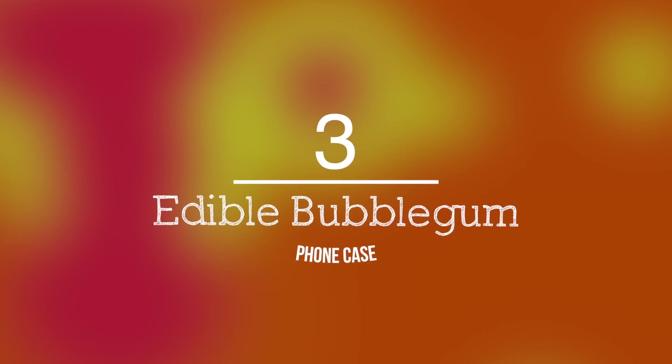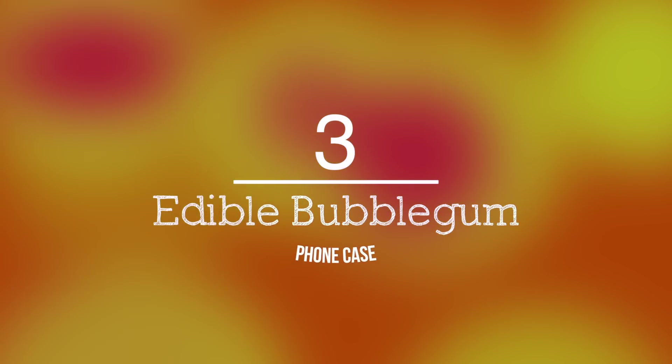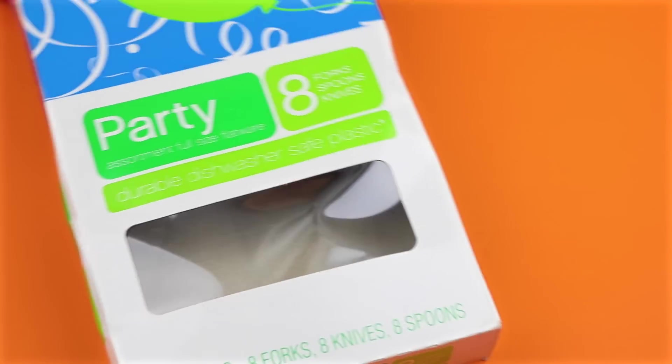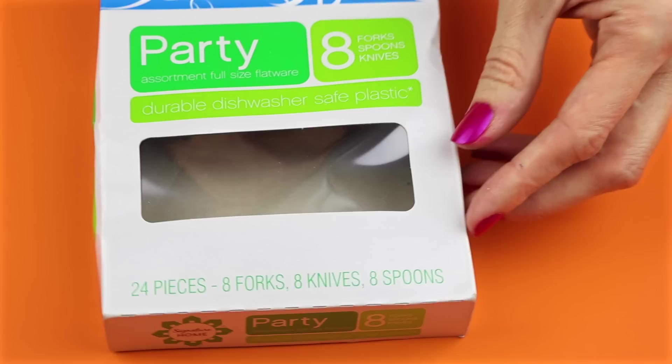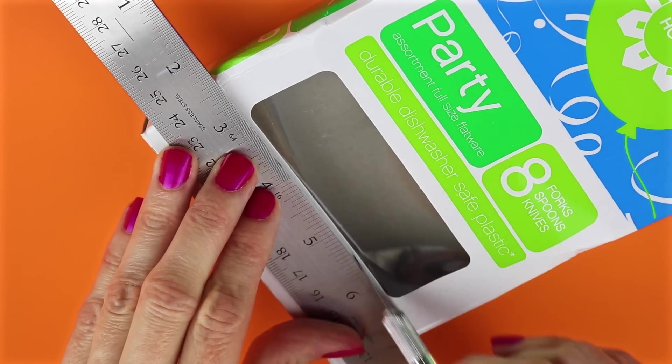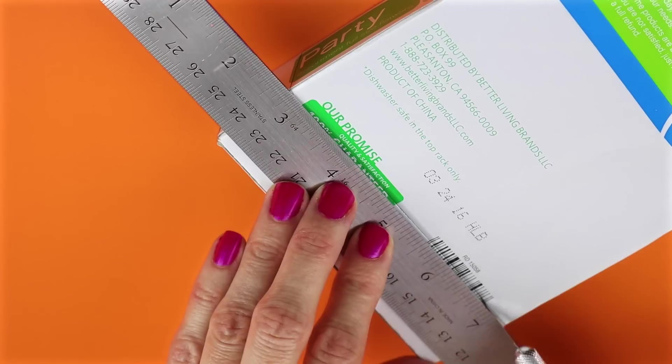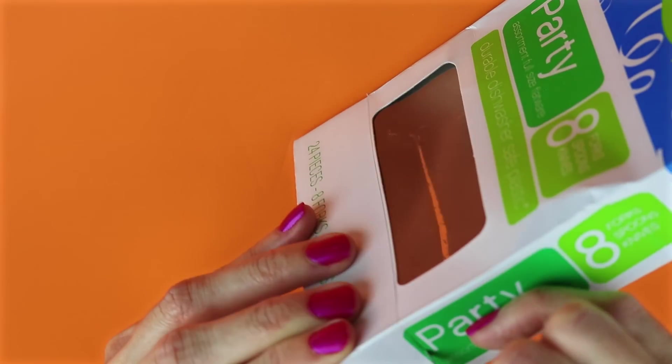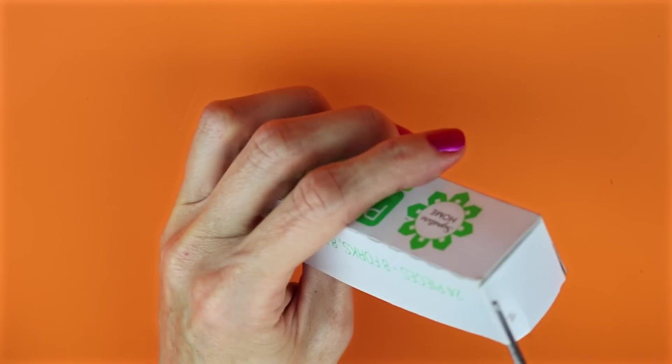The third DIY foam case will be a bubblegum foam case with real gum in it that you can eat. For this one I am going to use one of these boxes that had some forks and spoons and knives in it. Start by cutting off the bottom of the box. Next, cut one of the ends of the box.